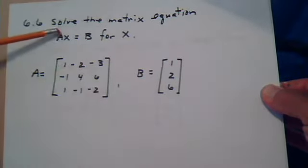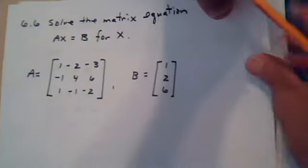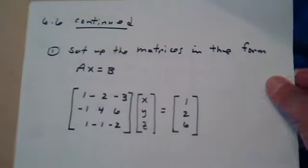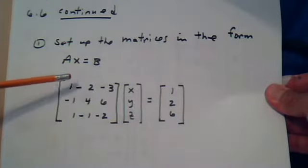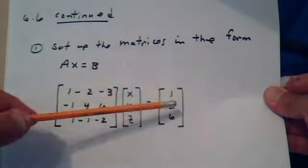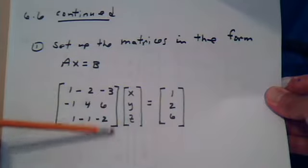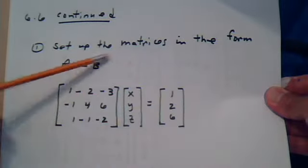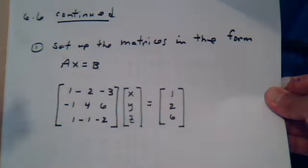Here's matrix a and here's matrix b. We're going to set up the matrix in the form ax equals b. Here are the matrices they gave us — this is a and this is b. Now I need to get the a canceled out on the other side, but I can't divide since these are matrices, not real numbers.